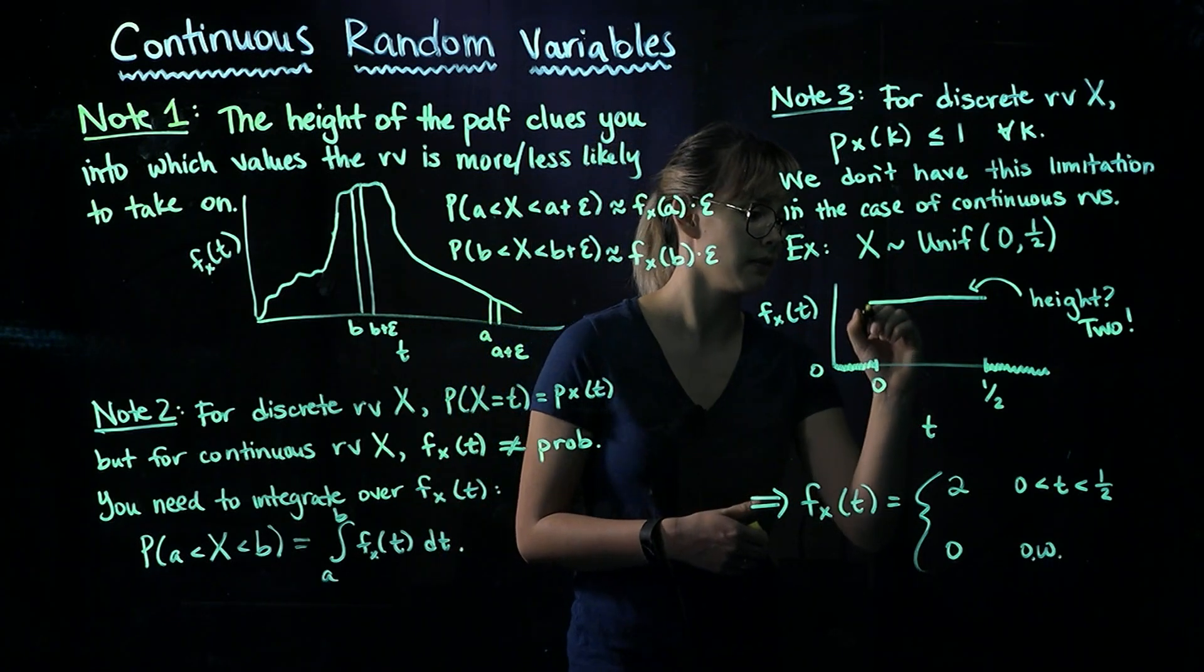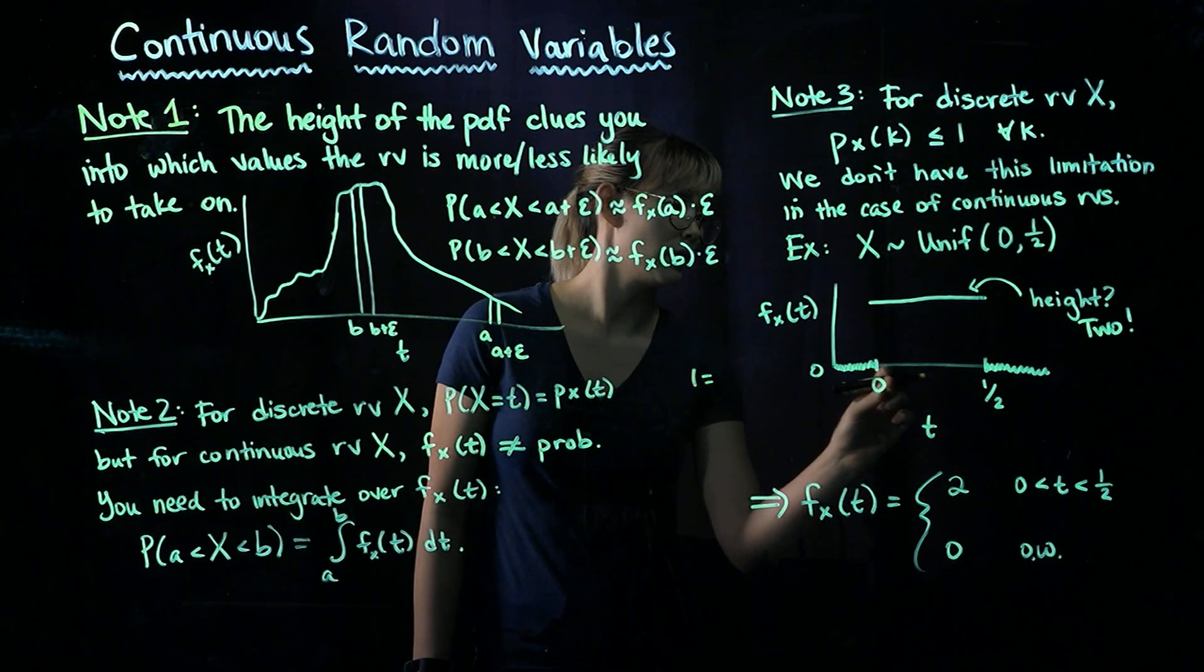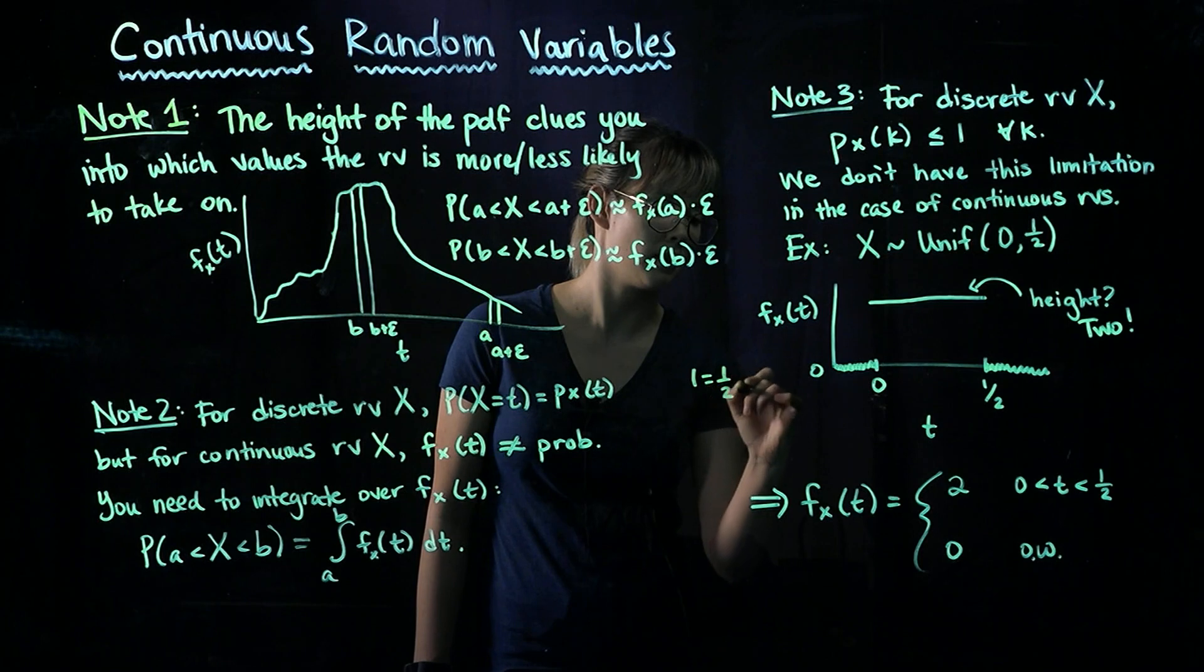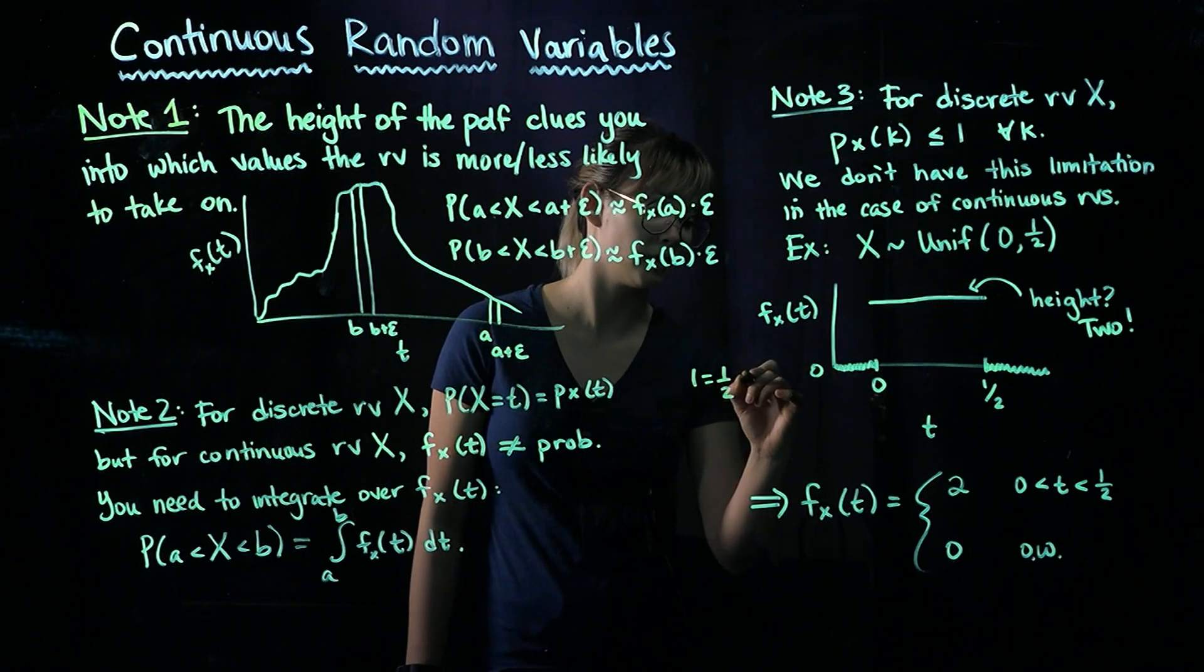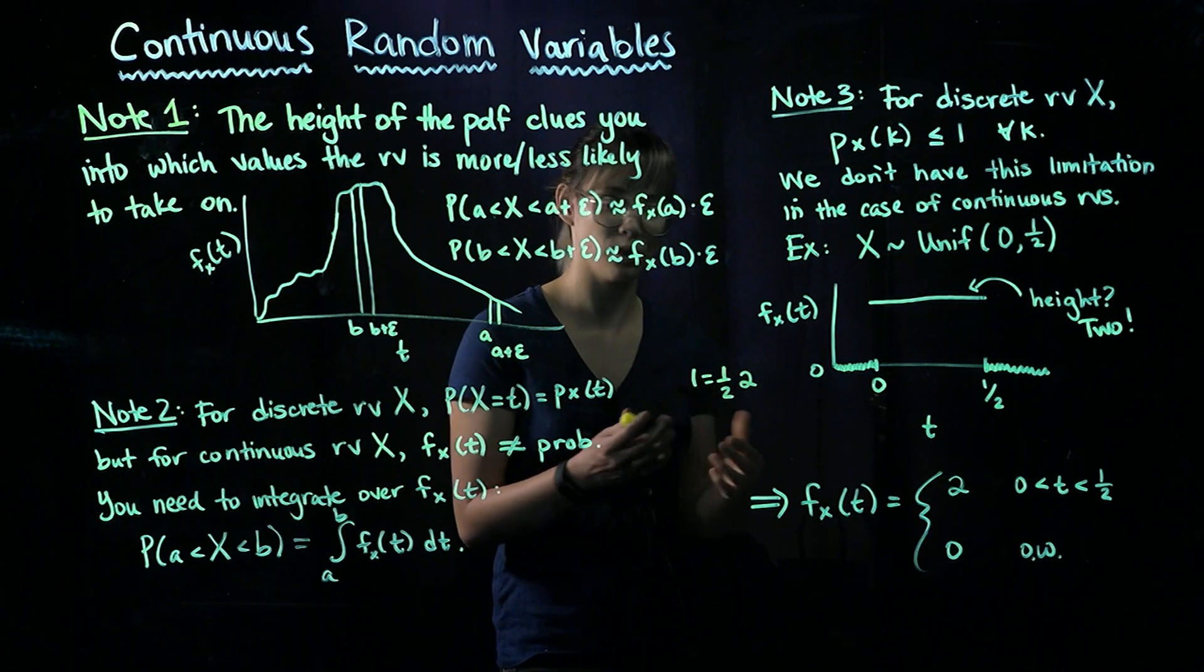We know that the area is equal to 1. And then this width here is 1/2. And then the height is going to have to be equal to 2 in order for length times width to be equal to 1.